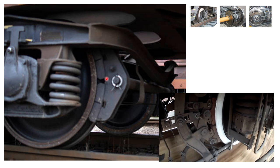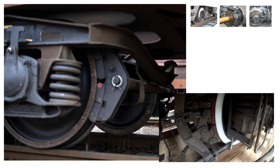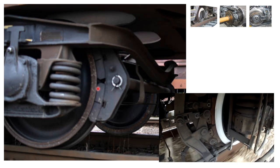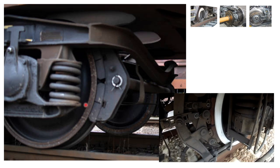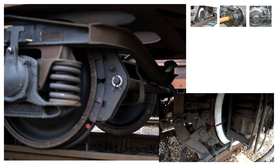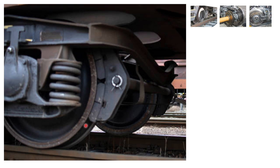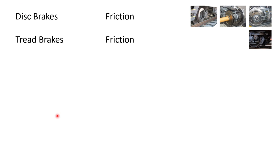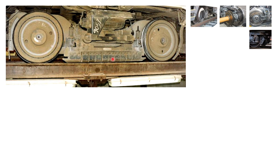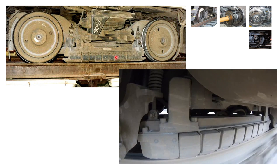The next type is tread brake. The concept is the same: blocks press against the wheel to provide the retardation force, and kinetic energy converts into heat energy on the block. The advantage here is that it cleans the wheel — any leaves, grease, contaminants, or water on the wheel are regularly cleaned — so you get better adhesion between the wheel and the rail. The downside is more wear and tear on the wheels.